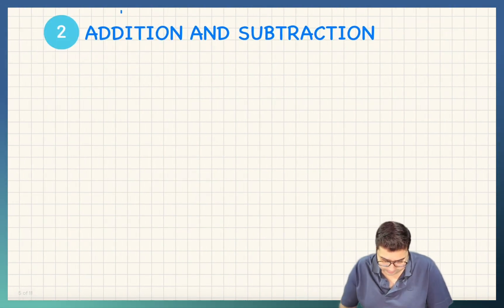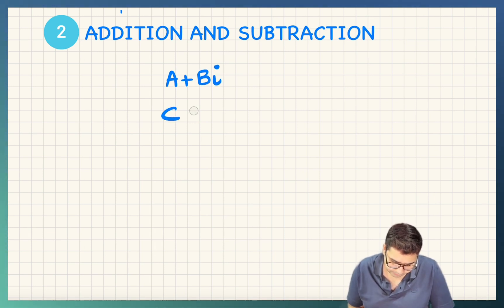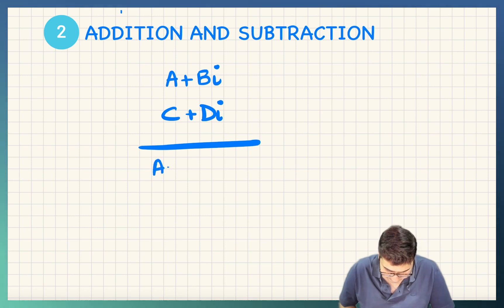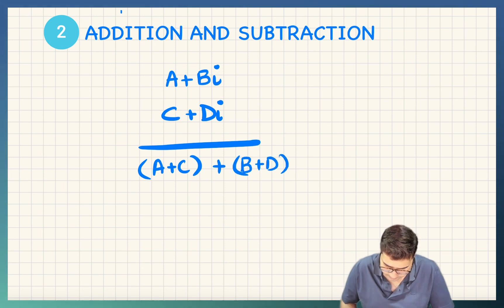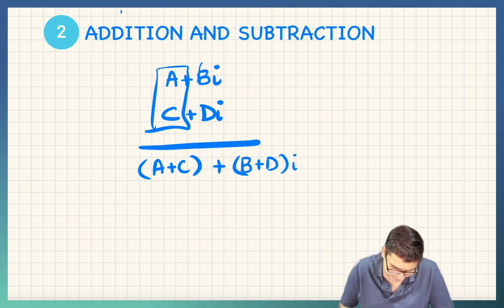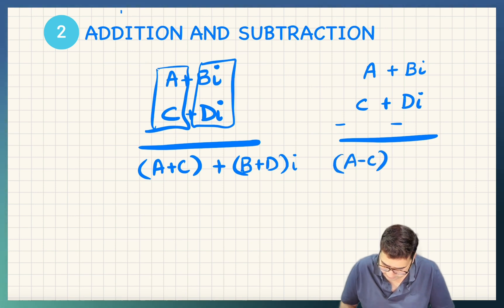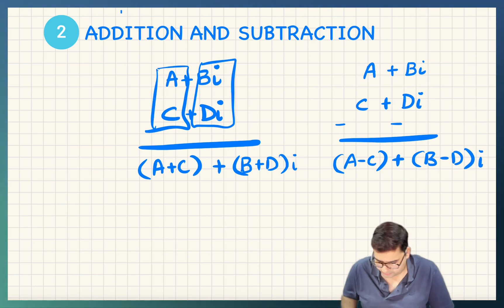Now, addition and subtraction of complex numbers. Suppose you have two complex numbers a plus bi and c plus di. If I want to add two complex numbers, it is quite intuitive that you must add the real parts together and the imaginary parts together. So this becomes (a plus c) plus (b plus d)i — add the real parts, add the imaginary parts, as simple as that. The same goes for subtraction — subtract the real parts and subtract the imaginary parts — you get (a minus c) plus (b minus d)i.